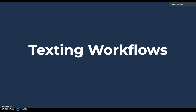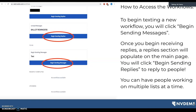Now let's go over what the texting workflows look like. To begin texting a new workflow, click 'Begin Sending Messages' as you can see on screen. When people start replying, you'll see a section that says 'Begin Sending Replies.' You can work on multiple lists at a time — for instance, you might be texting a volunteer recruitment list and a voter registration reminders list simultaneously, and both will show up in your dashboard.